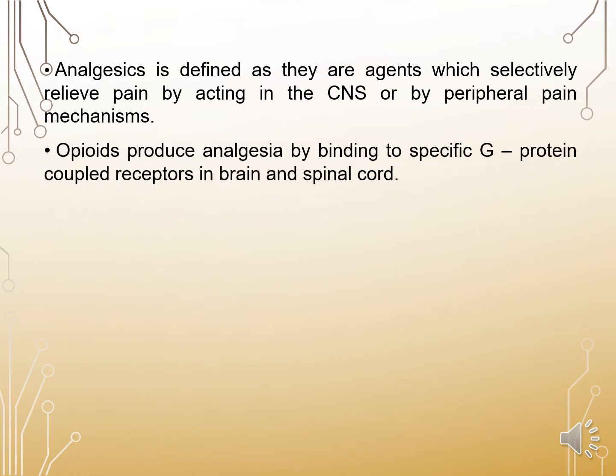Opioid drugs produce analgesia by binding to specific G-protein coupled receptors in the brain and spinal cord. Narcotic opioid analgesics directly inhibit these G-protein coupled receptors, resulting in analgesia.